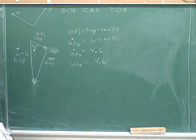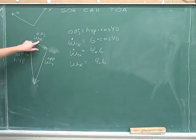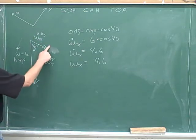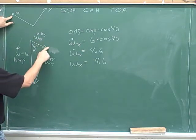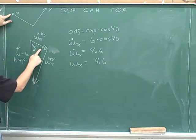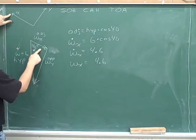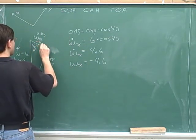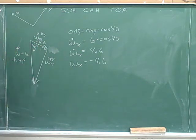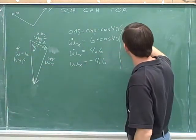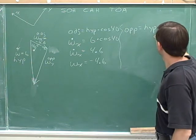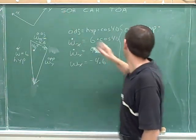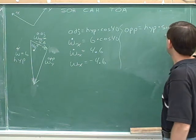Here we use the arrows we put on the components. We decided that W_x was pointing down and right, but the positive direction is up and left. W_x is pointing anti-parallel to the positive direction, so W_x would be negative.